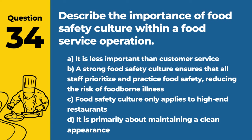Question 56. Describe the impact of precision agriculture on food safety. Answer: C. By optimizing the use of water, nutrients, and pesticides, it can lead to safer food products. This approach can enhance food safety by reducing the chances of contamination from the source.